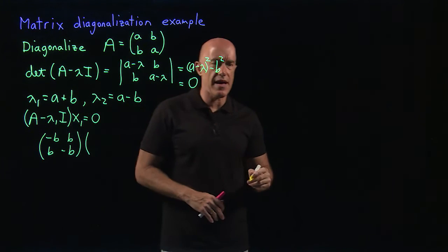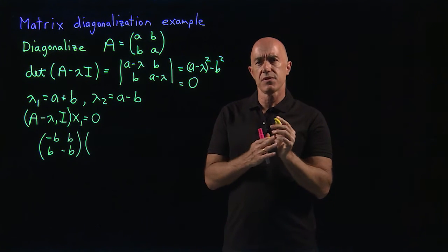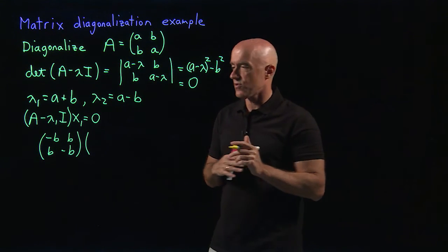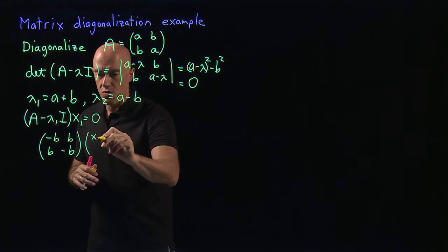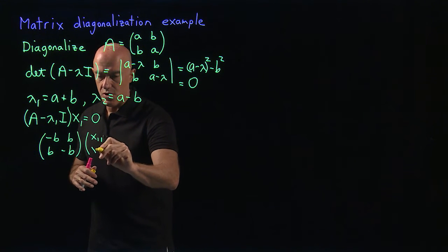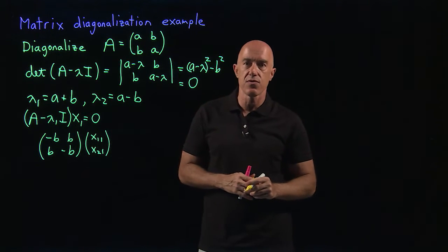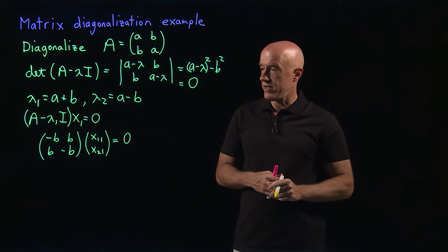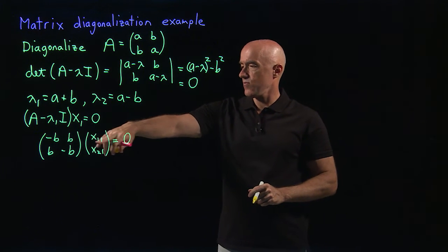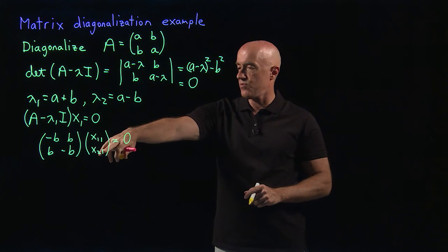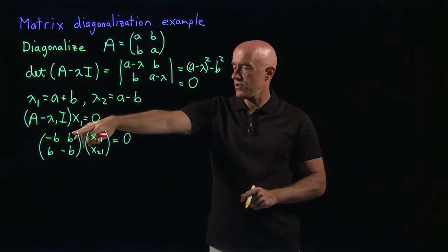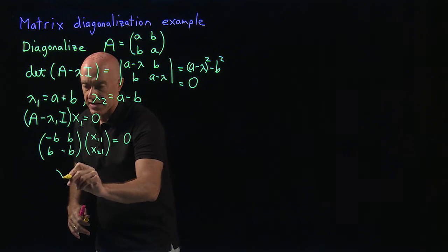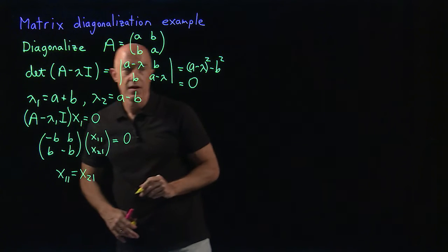The eigenvectors are going to be the columns of the S matrix we'll use to diagonalize A. So for the first eigenvector X1, I'll use the notation with row-column indices. The equation gives us minus B times X11 plus B times X21 equals zero, and the second equation is the same. So simply X11 equals X21 for the first eigenvector.